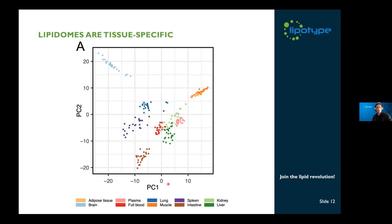When we did a clustering of the lipidomes, it turned out — and this is not surprising as reported by others — that you get very distinct, specific lipid compositions of the different sample types. We have adipose tissue, brain, plasma, full blood, lung, muscle, spleen, intestine, kidney, and liver samples, and each of them gives a very distinct lipid signature.